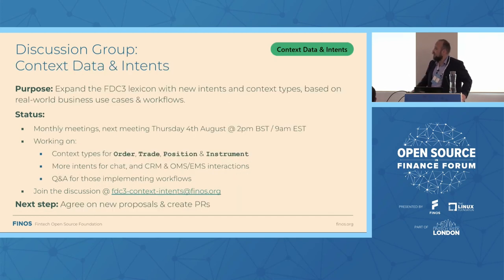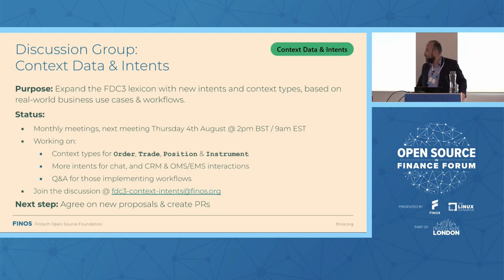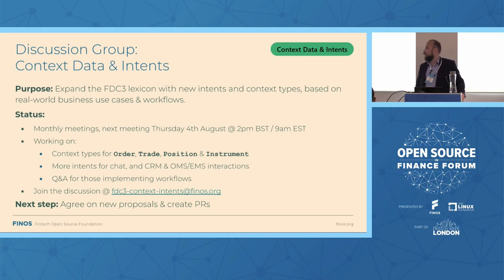We've also got the context data and intents group, expanding the lexicon — it currently meets monthly but we have breakout meetings as well. At the moment we're working on context types for order, trade, position, and instrument. We're looking to have those up and available for people to start using in the short term — doesn't actually have to wait for 2.1. We're also working on intents for chat, CRM, OMS and EMS interactions, and also straight Q&A for people trying to do this stuff. Come along and talk about what you need or what we should be doing for you — what workflows you need to see standardized and what vendors you need to be able to interchange.